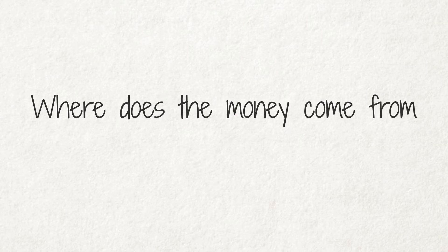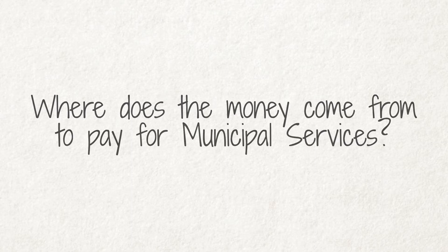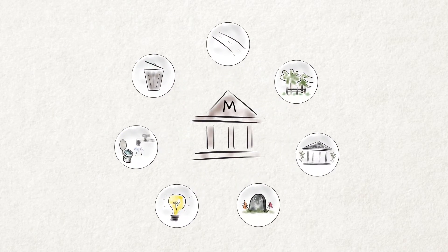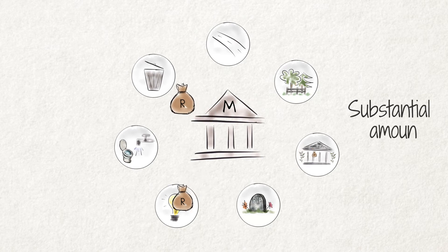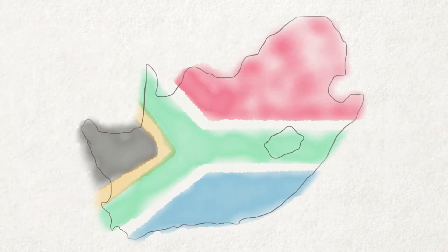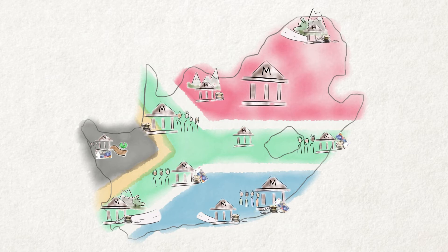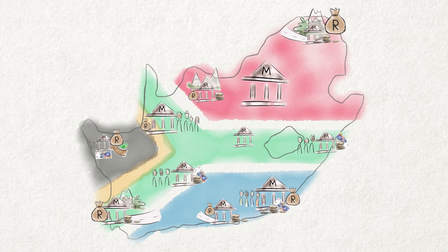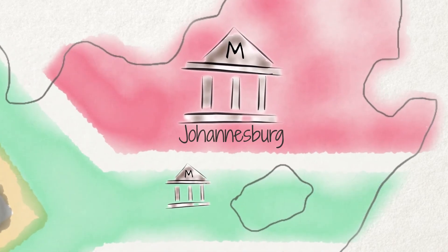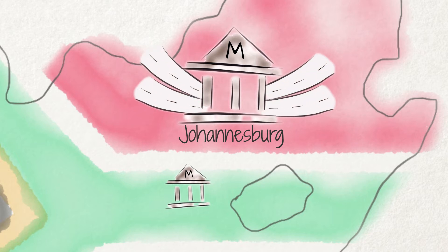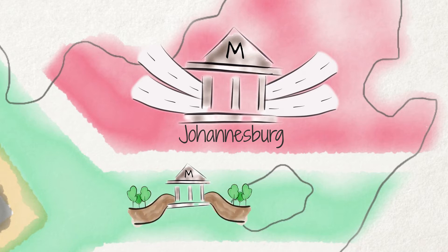Where does the money come from to pay for municipal services? To be able to provide the constitutionally mandated services, municipalities need substantial amounts of money. Municipalities vary greatly in size, social structure and service requirements, meaning that their ability to generate income and the costs they encounter also differs widely. A big city like Johannesburg, for example, needs to build and maintain many freeways, whilst small rural towns have to take care of fewer tarred roads.